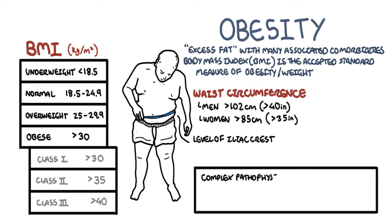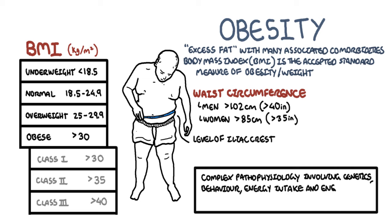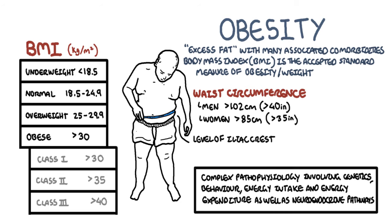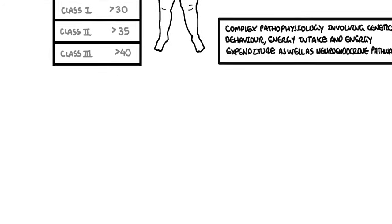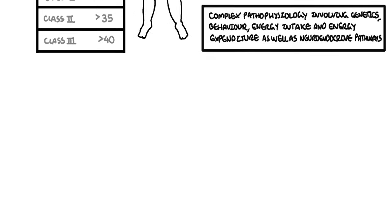Obesity is complex and the pathophysiology involves genetics and behavioral habits. There is energy intake versus energy expenditure, as well as changes in the neuroendocrine pathways. Simply put, obesity occurs when you have increased energy intake but reduced expenditure, and all this accumulation of energy goes into fat deposits around the body.